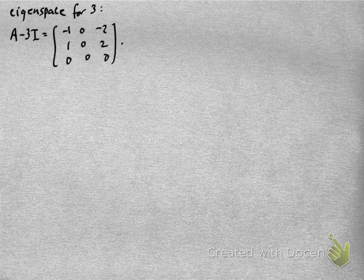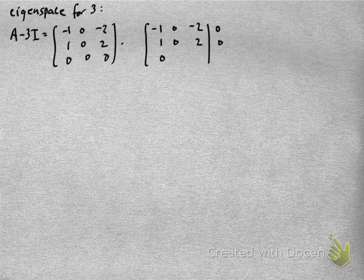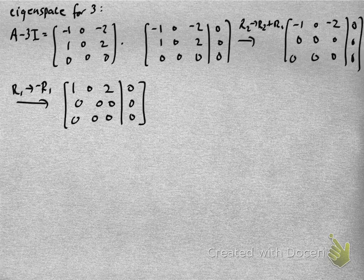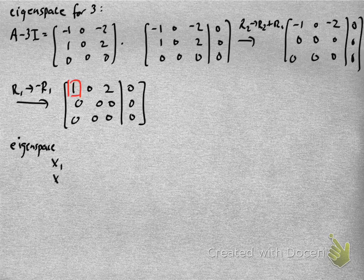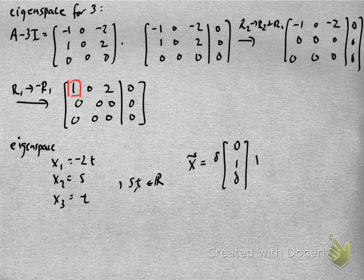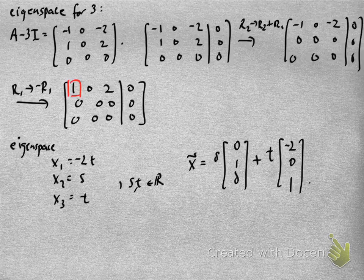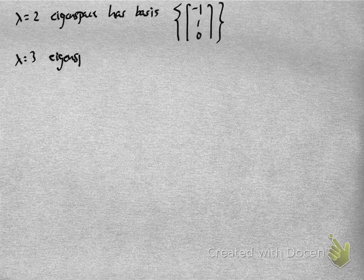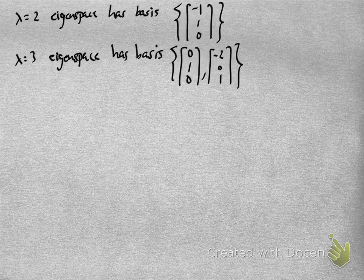For the eigenspace for lambda equals 3, I compute A minus 3 times the identity and get this matrix. Again I want to compute the null space, so I set up the augmented matrix and row reduce — in this case the row reduction is easy. Putting a box around the pivot to highlight free and basic variables: x2 and x3 are non-pivot columns, so those are free. Let me call them free parameters s and t, and x1 is minus 2t. In parametric form, the solution set is x equals s times [0, 1, 0] plus t times [-2, 0, 1]. So the lambda equals 3 eigenspace has basis {[0, 1, 0], [-2, 0, 1]}.